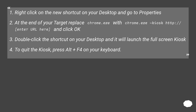Right-click on the new shortcut on your desktop and go to Properties. At the end of your Target, replace chrome.exe with: chrome.exe --kiosk http://[enter URL here], and click OK. Double-click the shortcut on your desktop and it will launch the full screen kiosk. To quit the kiosk, press Alt+F4 on your keyboard.